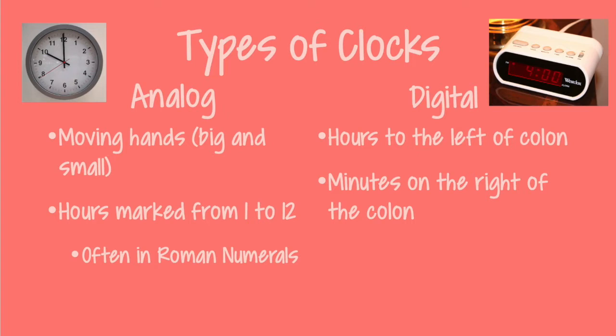The other type of clock is a digital clock. In this, we have the hours on the left side of the colon and we have the minutes on the right side of the colon. So these are the two types of clocks: analog and digital.